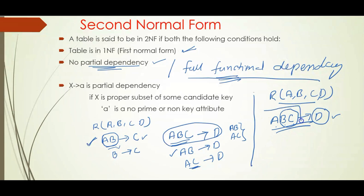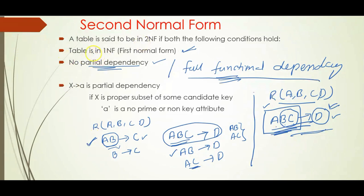This means whenever we take a functional dependency, the determinant must be a candidate key or primary key. If the dependent attribute is a non-prime attribute and the determinant is a candidate key, then it holds full functional dependency. So basically, a relation R is in the second normal form if it must be in first normal form and have no partial dependency — or equivalently, must have full functional dependency.